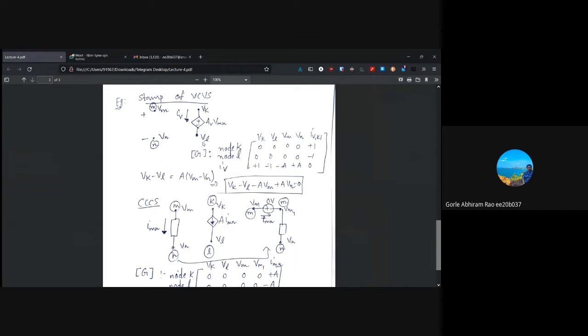And between points k and l, we have this voltage source of potential difference a into vmn connected. So, if we try and write the equation for node k, the current that is flowing away from node k is just iv.